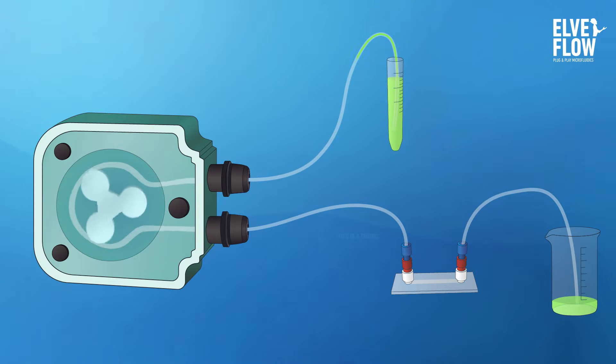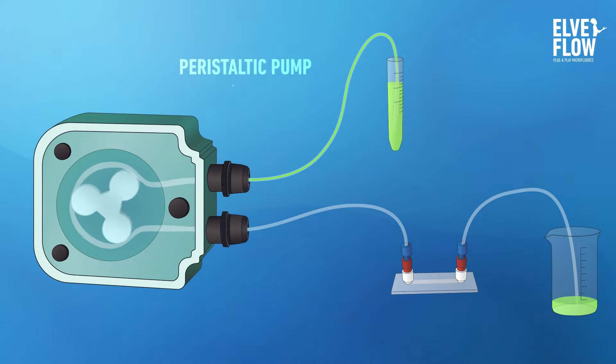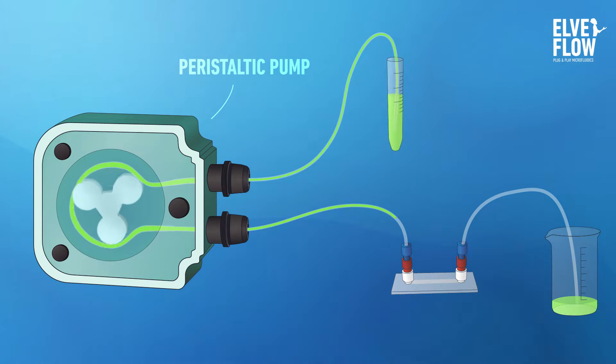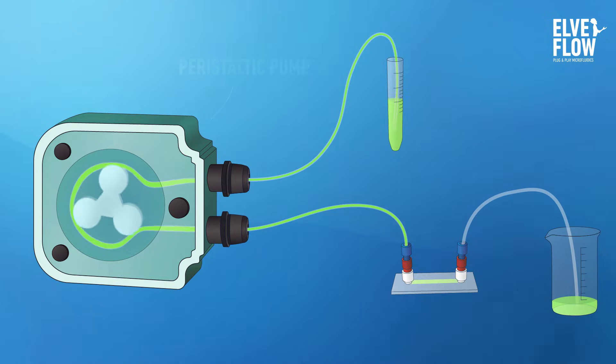The first method uses a peristaltic pump. This instrument applies a mechanical action onto a flexible tube to push the liquid flow from the tubing entrance to the exit.